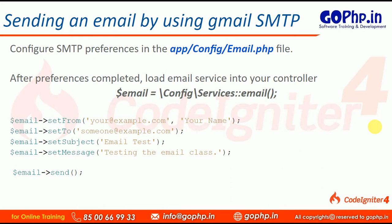If you want to send an email from our local machine we need to configure SMTP. Without SMTP we cannot send an email from our local server. To configure SMTP we have an email class available in our config location. We open that file, configure the SMTP server, then load the email service into our controller class and instantiate it. We can then use the methods: setFrom, setTo, setSubject, setMessage, and send.